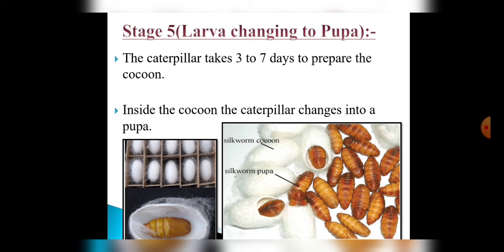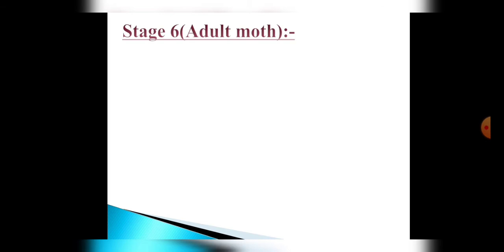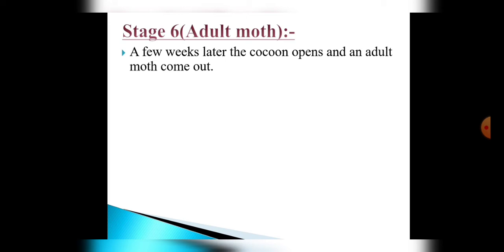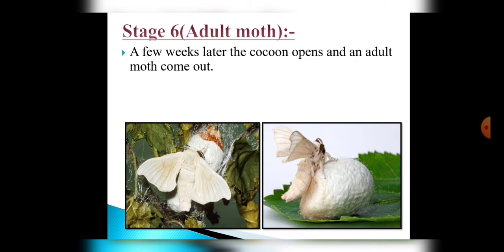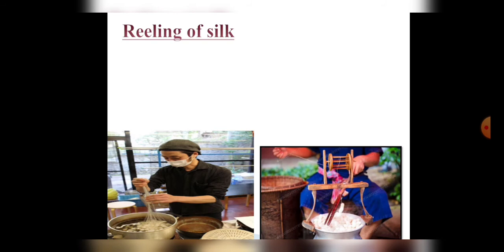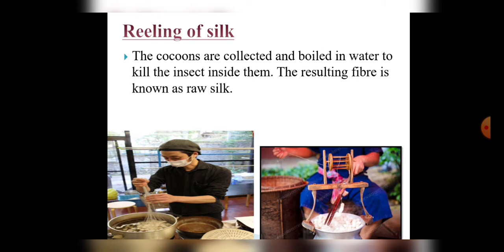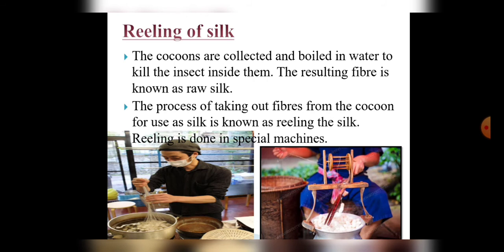Inside the cocoon there is a pupa which is brown and yellow in color. In stage 6, which is the final stage, a few weeks later the cocoon opens and an adult silk moth comes out, completing the life cycle of the silkworm. After this process, silk threads are obtained from the cocoon by boiling them. Some insects get killed in this process. This process of extracting silk threads is known as reeling of silk.